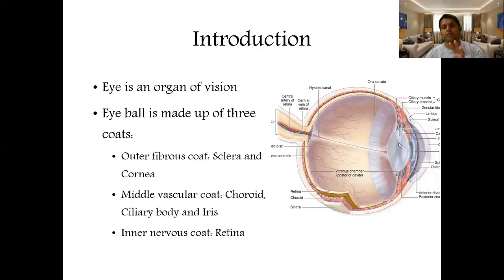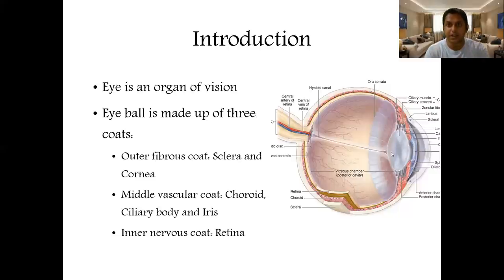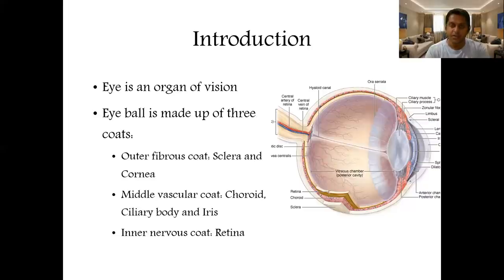One of the commonest opacities is in the lens, and this pathology is called cataract, which can be treated surgically. There are a few more pathologies which we will go through one by one.